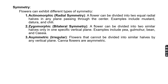Next is symmetry. As per symmetry, flowers can be divided into three groups: actinomorphic, zygomorphic, and asymmetric. Actinomorphic means radial symmetry — a flower can be divided into two equal radial halves in any plane passing through the center.